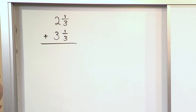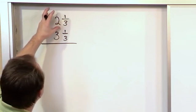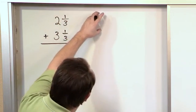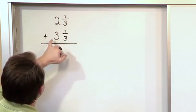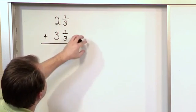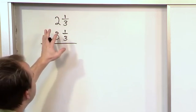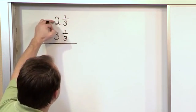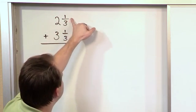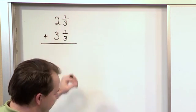Well think about it in terms of pies or pizza. This is 2⅓ pizza, so you have two full pizzas plus another third. Here you have 3⅓ pizzas, which means three pizzas plus another third. So you have two whole pizzas here, three whole pizzas here, and then you have another third of a pizza and another third of a pizza.